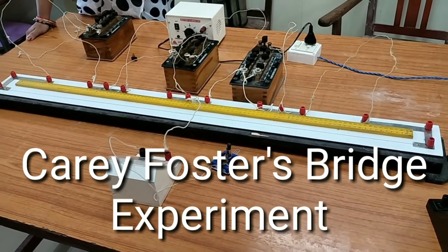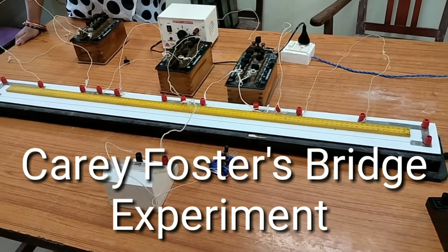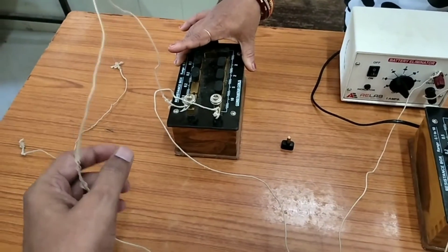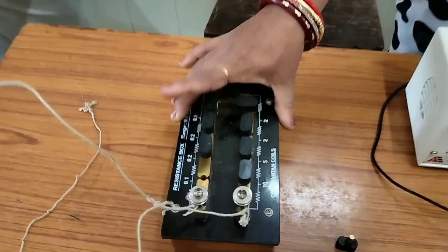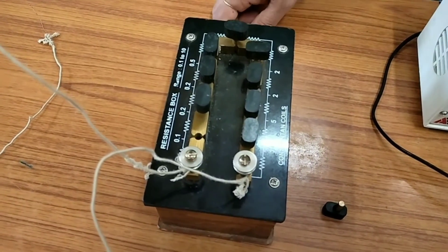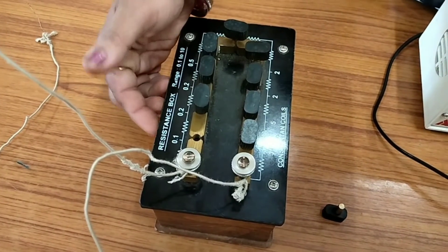This is the experimental setup for Carifoster's Breeze. In this experiment you can find out the difference of resistances. This is a small resistance - here I have taken a resistance of 0.1 ohm, or you may say fractional resistance.